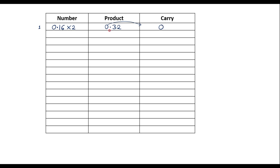Now consider the fraction value 0.32. Multiply 0.32 by 2 — this is the second time — and the result is 0.64. Write 0 as the carry. Now consider 0.64 multiplied by 2 — third time — giving 1.28. Write 1 as the carry. Now consider only the fraction part: 0.28 multiplied by 2 — fourth time — gives 0.56.